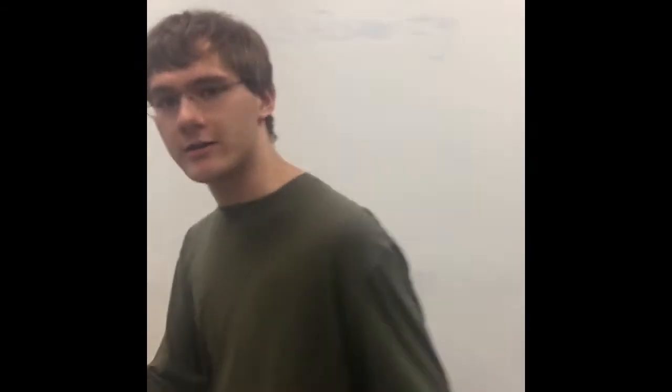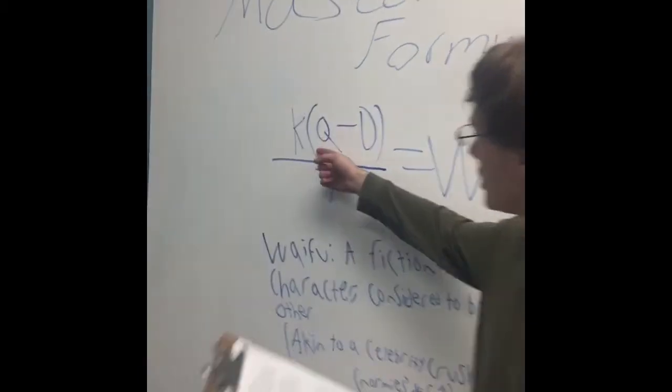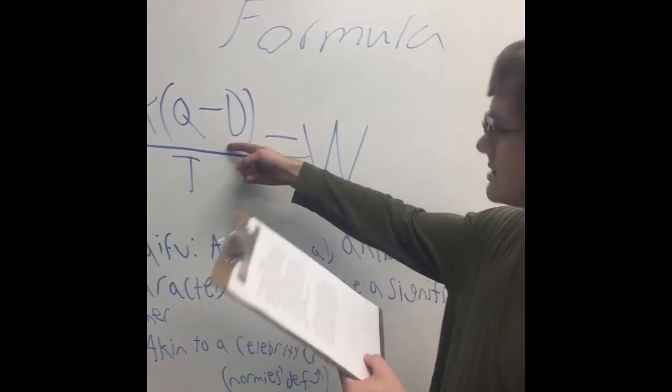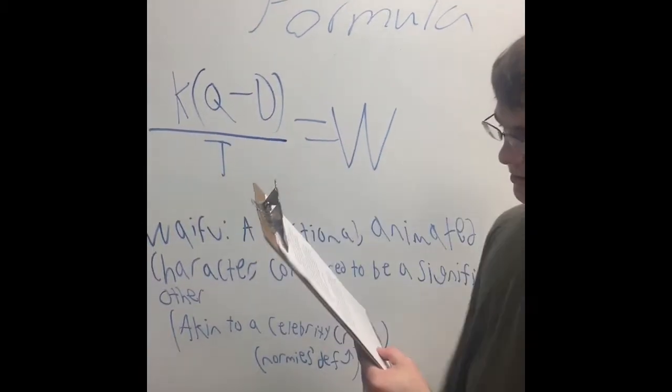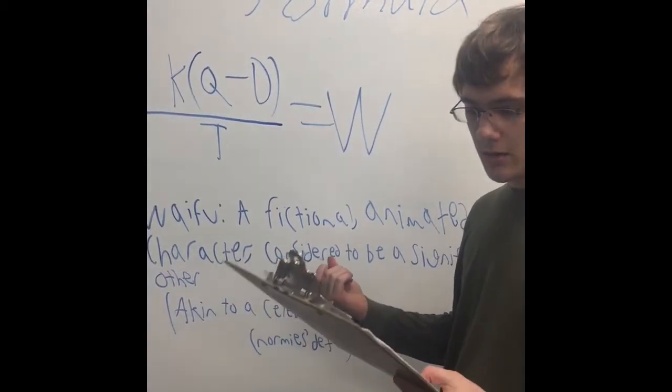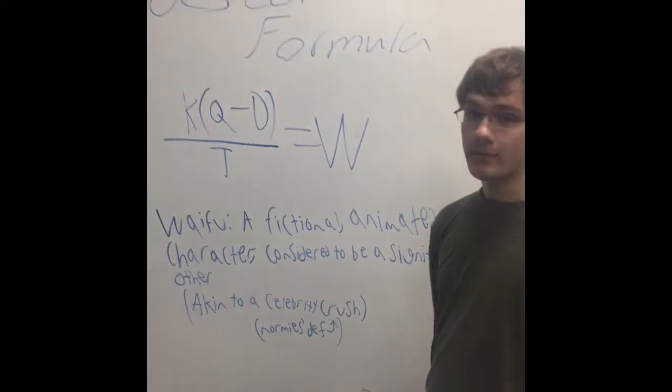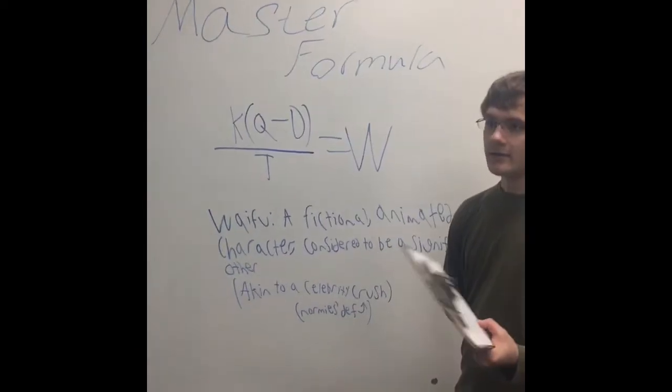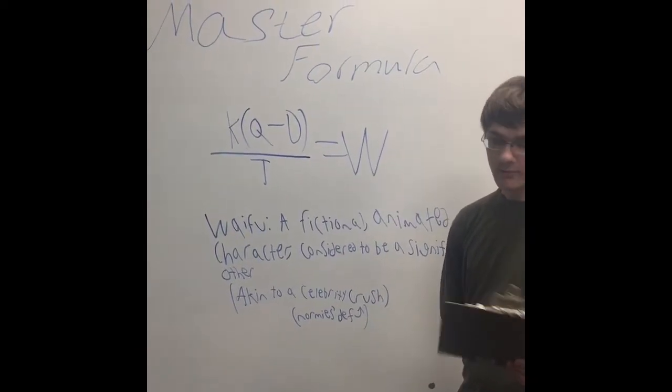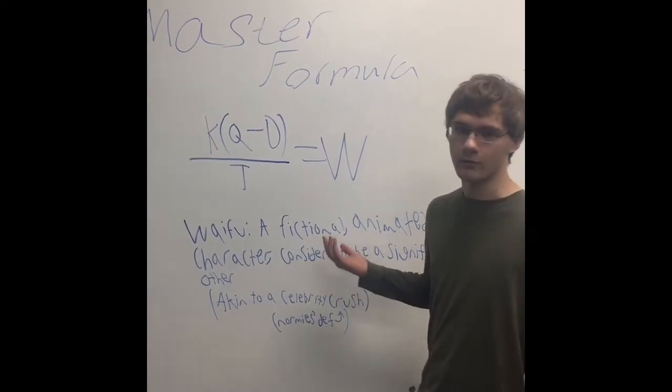Now, every waifu can be broken down into four base elements: the kawaii coefficient k, the depth determiner q for quality, disposability d, and the thought factor t. There may be as yet undiscovered other elements of waifu composition, but for now these work well enough. And because these factors can be modeled by functions, it's possible to optimize them using calculus to determine the maximum and minimum of the appropriate sub-functions and, by extension, the perfect waifu.